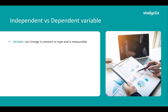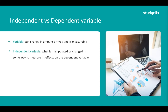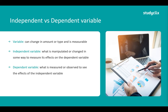A variable is something that can change in amount or type and something that is measurable. This is subject to change experiment to experiment. Our independent variable is what is being manipulated or changed in some way to measure its effect on the dependent variable. Our dependent variable is what is being measured or observed. Simply put, the independent variable is what is being manipulated and the dependent variable is what is being measured.